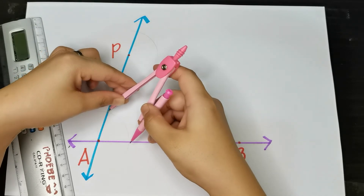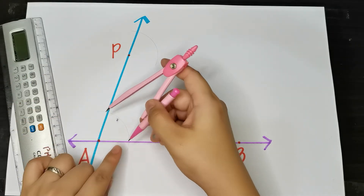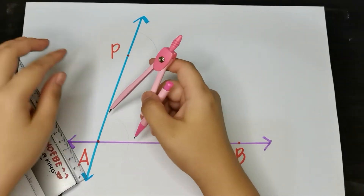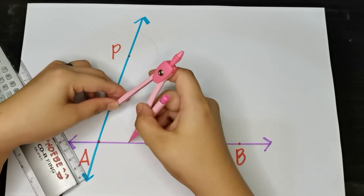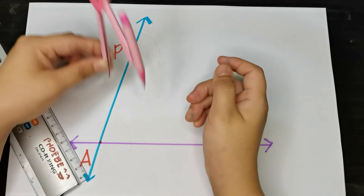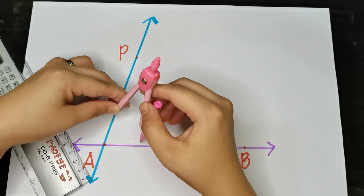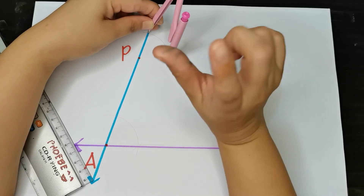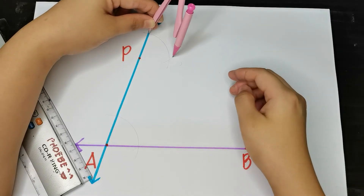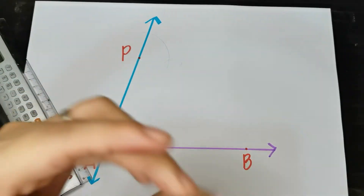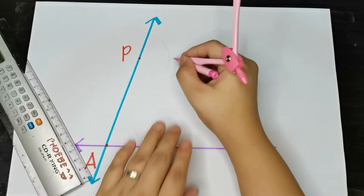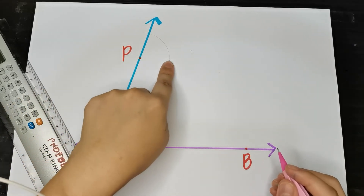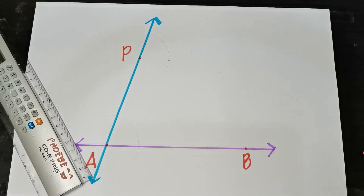Then adjust the opening of your compass so that the pencil point aligns with the intersection point. Draw a small arc. You can see we now have two arcs that intersect with each other — the big arc and the arc at point P — giving us a point of intersection. Then connect point P to this point. Let me name that point as point R.